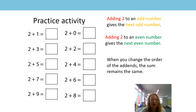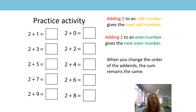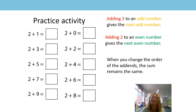Now, what's a bit different about these number sentences that we haven't come across before? Did you spot it? Good — they start with the two. But we know that when you change the order of the addends the sum remains the same, so we're going to start with the odd number and add the two to that, because we know it gives us the next odd number.